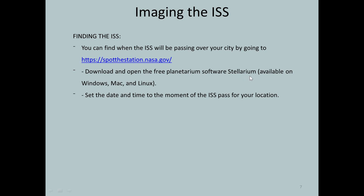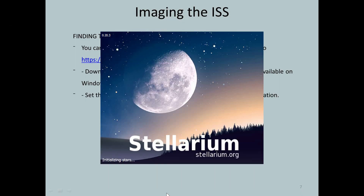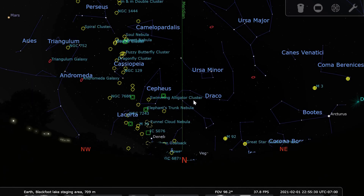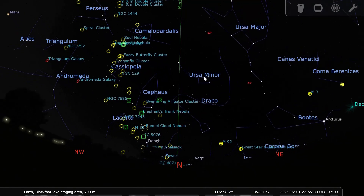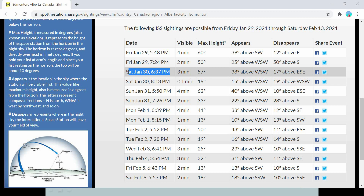The second thing you need to do is download the free program Stellarium, or use a planetarium app such as Sky Safari. I prefer to use Stellarium on my desktop and on my phone. Once Stellarium is open, I'm going to set the time to when the ISS is going to be visible — that's January 30th, 6:37 p.m.